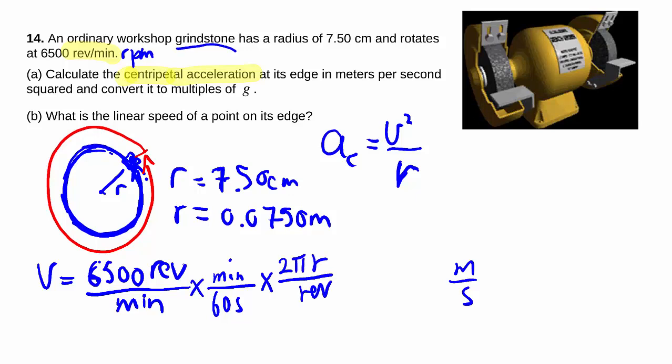It's 2 pi r per revolution, and r, as we know, has got meters in there. That's why all the units will work out, giving us meters per second. So we have 6500 divided by 60 times 2 pi, oh, second is still around, 2 pi times 0.0750 meters. And that's why we have meters per second.